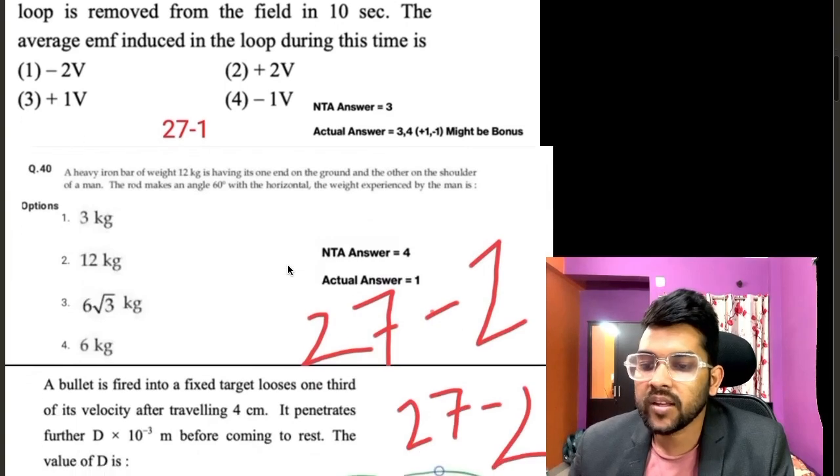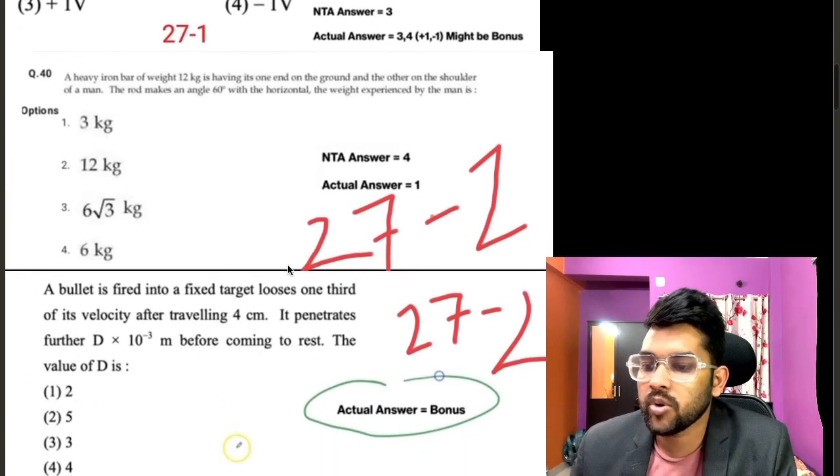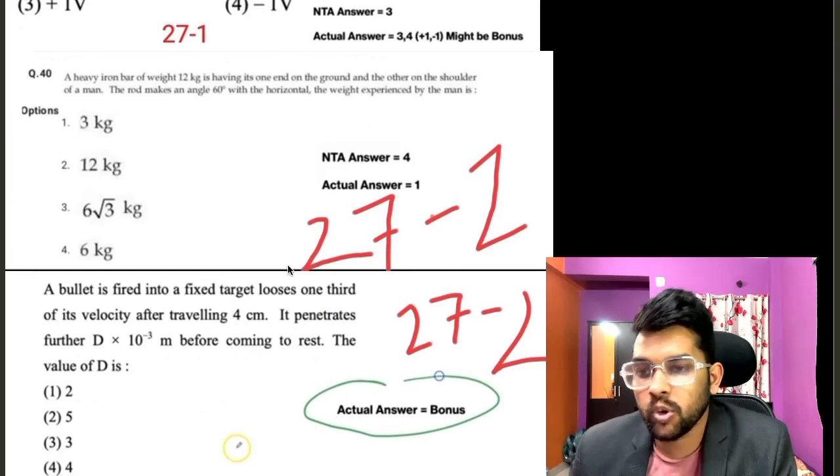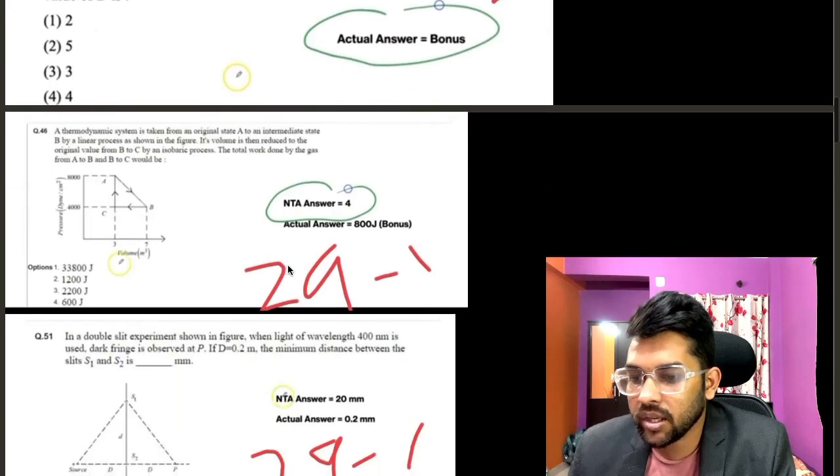Now if you go to 27 shift 2, two questions are having problem. One is having error problem, second is having bonus problem.